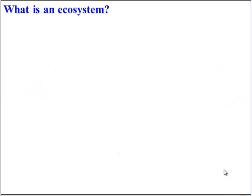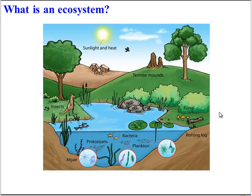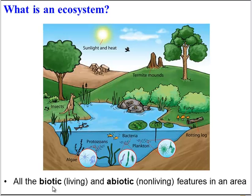Let's start by defining ecosystem. An ecosystem is simply all of the living and non-living things in an area. A more technical term for living is biotic, and a technical term for non-living is abiotic. So in this particular ecosystem, some biotic components would be bacteria, plankton, insects, and termites, whereas abiotic non-living features would be sunlight, the air, the water, the soil.